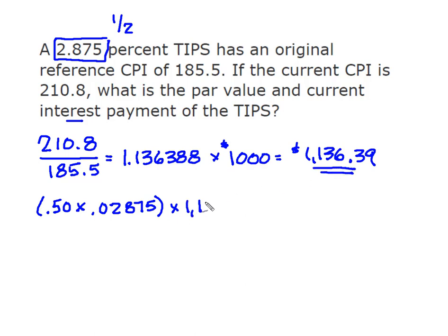So I'm going to multiply it by my 1136.39, which is the current value, and I'm going to end up with an interest payment of $16.335, which is going to become $16.34.